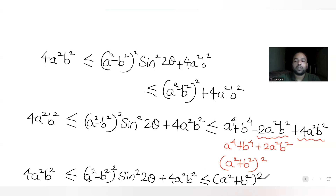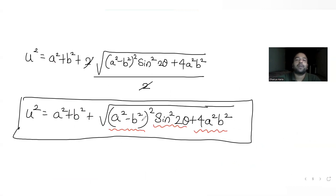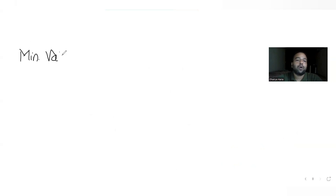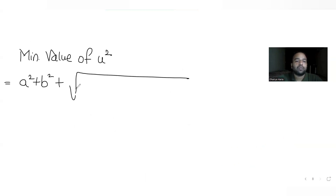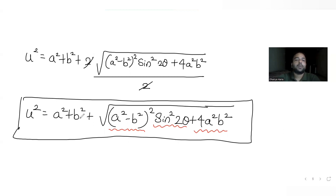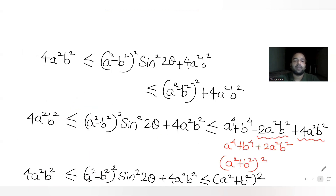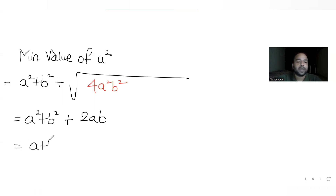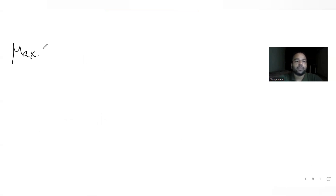So for the expression inside the root, the minimum value is 4 a square b square and the maximum value is (a square plus b square) whole square. The minimum value of u square becomes: a square plus b square plus root of 4 a square b square, which equals a square plus b square plus 2ab. That is nothing but the expansion of (a plus b) the whole square.